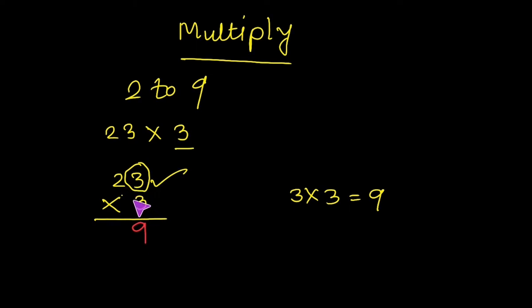Now, 2 tens is multiplied by 3. 2 times 3 is 6. 6 is written in the tens place. The answer is 69.